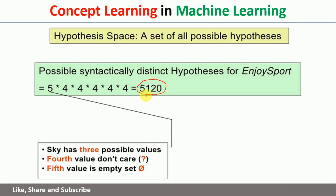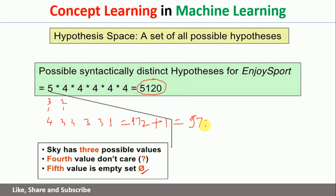Now, all these hypotheses are not correct because many of them contain null. We need to remove those and consider only one null representation. So instead of writing 5, we write only 3 actual possibilities plus 1 for question mark, giving 4 per attribute — similarly everywhere. It becomes 4 multiplied by 3 multiplied by 3 multiplied by 3 multiplied by 3 multiplied by 3, which equals 972, plus 1 null representation, giving 973 syntactically distinct hypotheses. Of these 973, we need to identify 1 solution that fits our 4 training examples. That is what is called concept learning in machine learning.